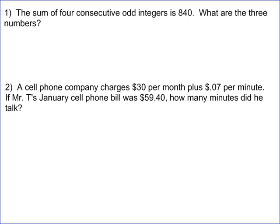The following are two word problems discussing things that will eventually have equations in them. On number one, it says the sum of four consecutive odd integers is 840. What are the three numbers?